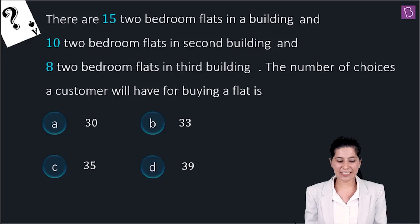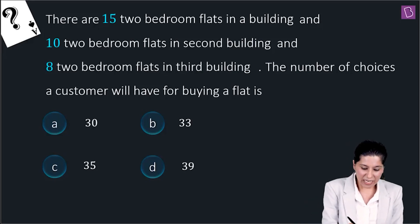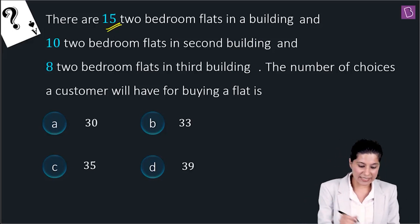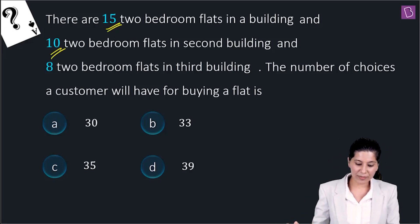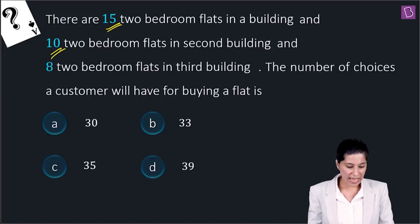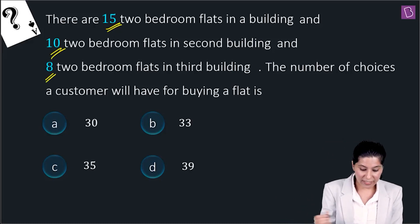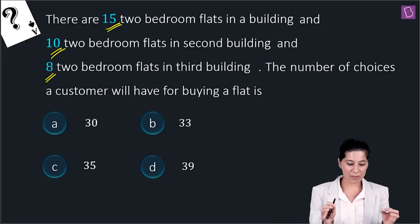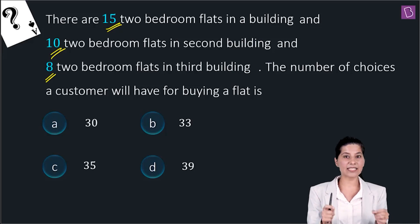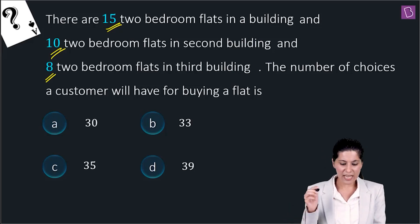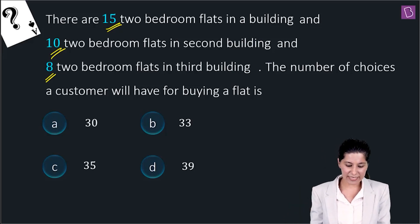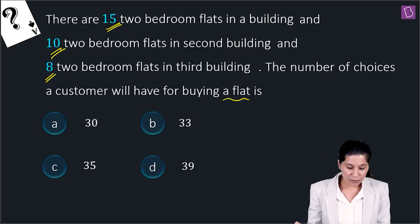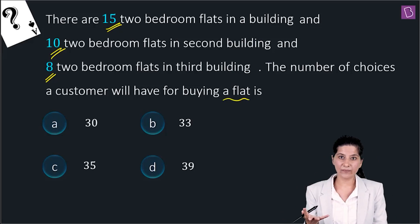Let's see what is asked in this question. There are 15 two-bedroom flats in the first building, 10 two-bedroom flats in the second building, and 8 two-bedroom flats in the third building — so 3 buildings with 1–15, 1–10, and 1–8 two-bedroom flats respectively. We have to find out how many choices a customer has if they want to buy one flat.